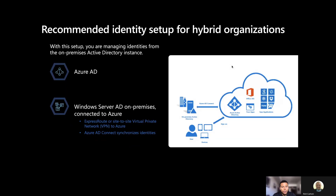Another option is for hybrid organizations. I've seen many partners and organizations use the hybrid model, where they have Azure Active Directory but also need to sync their on-premises Windows Server Active Directory to Azure. You can do this through Azure Active Directory Connect, which synchronizes these identities, and you can use ExpressRoute or a site-to-site VPN to Azure.